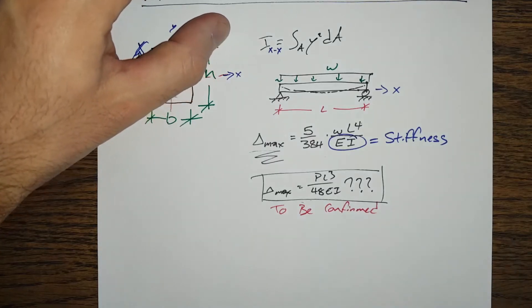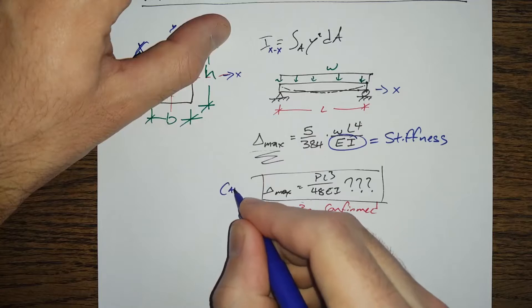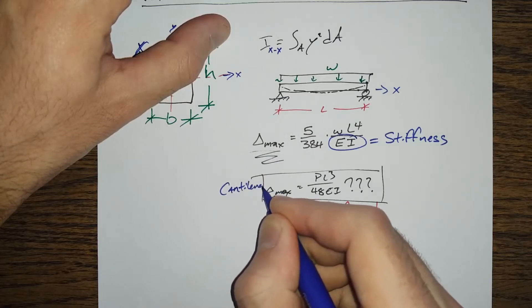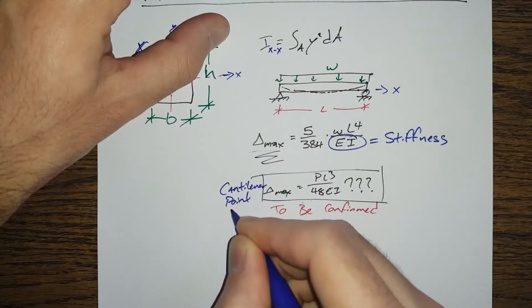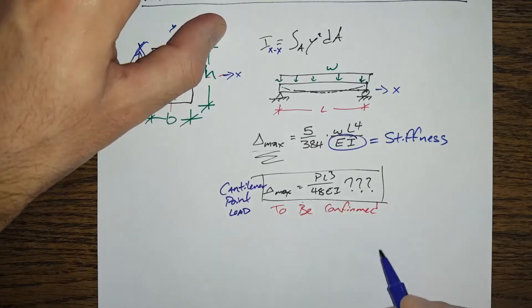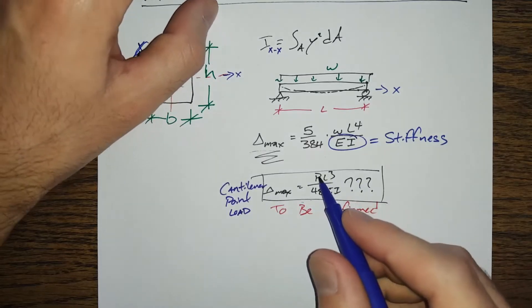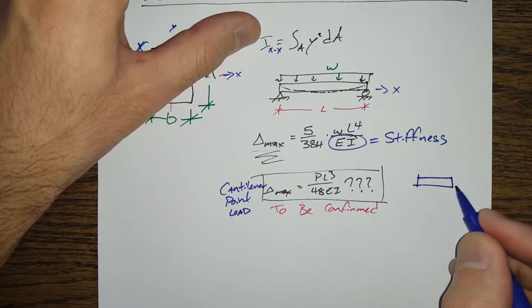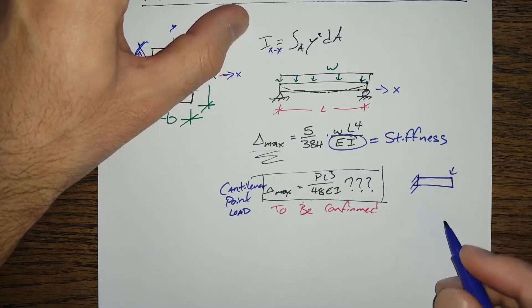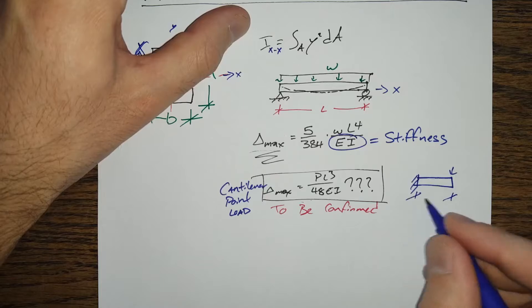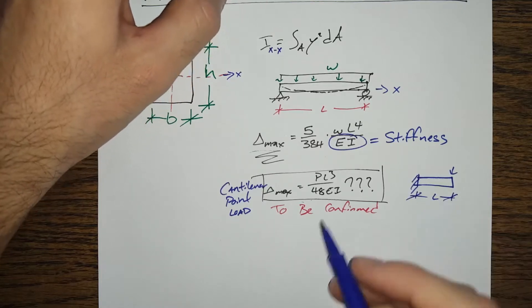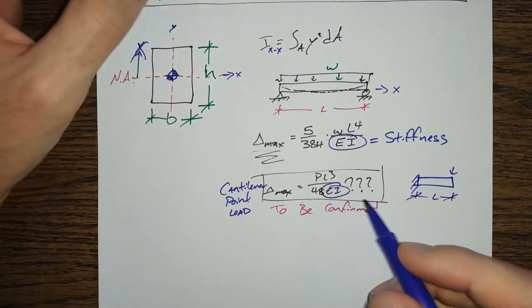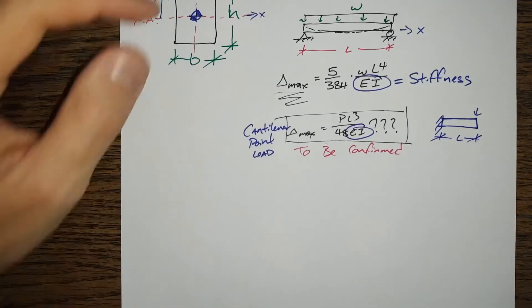I don't do cantilevers that often. Cantilever point load, but what I can tell you is it's got this same shape. You've got a load, you've got a span distance, you've got the length of the beam, and then you've got this same EI. So we've got E.